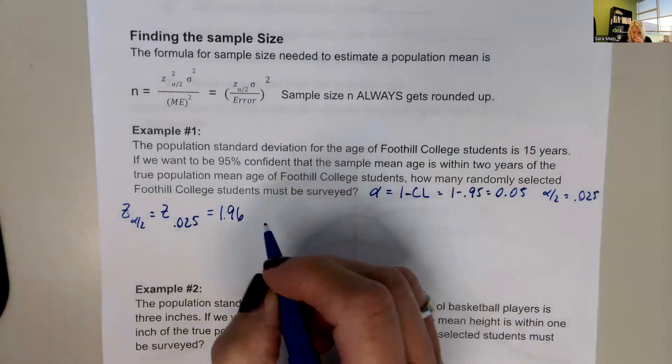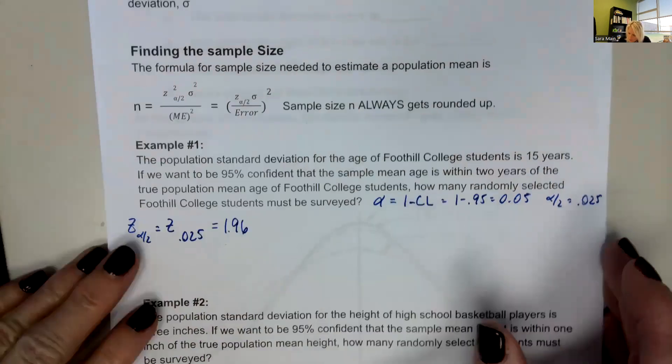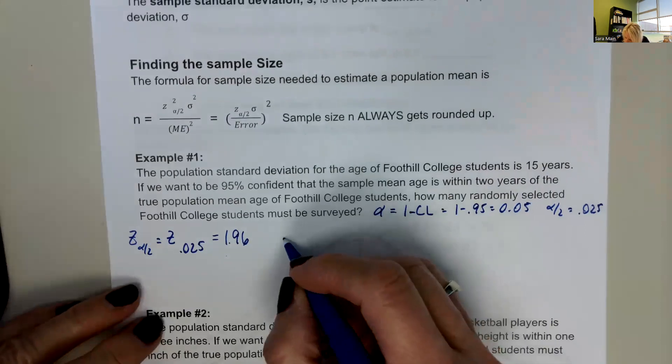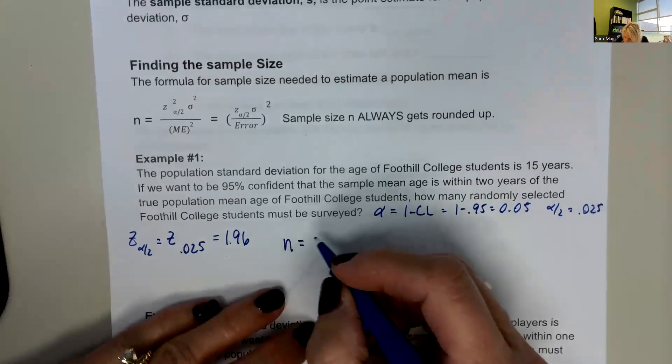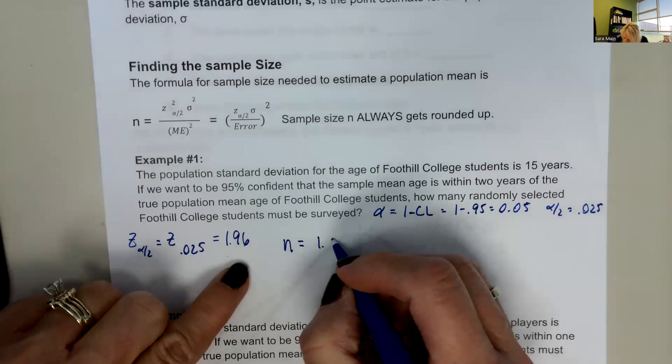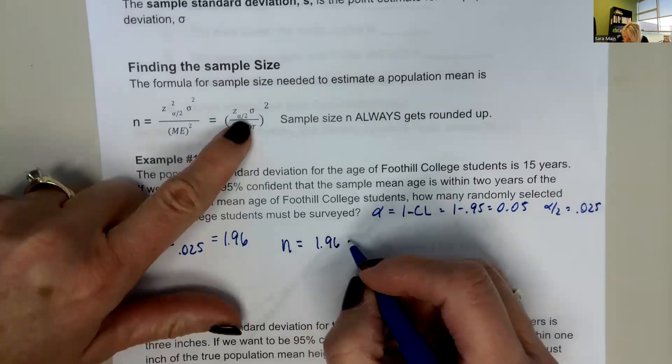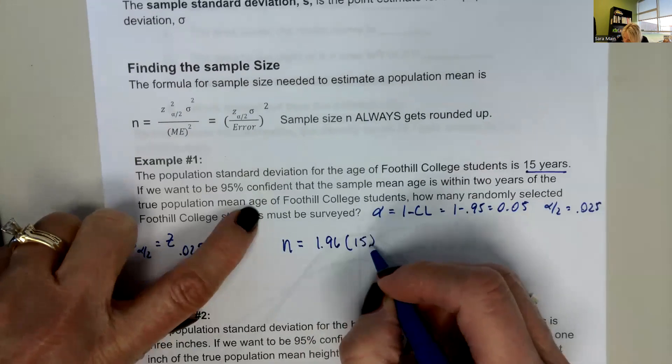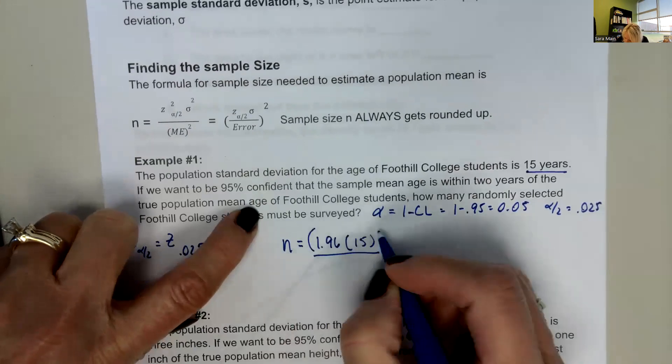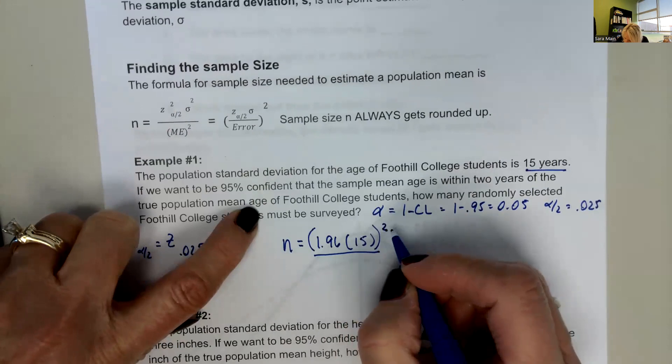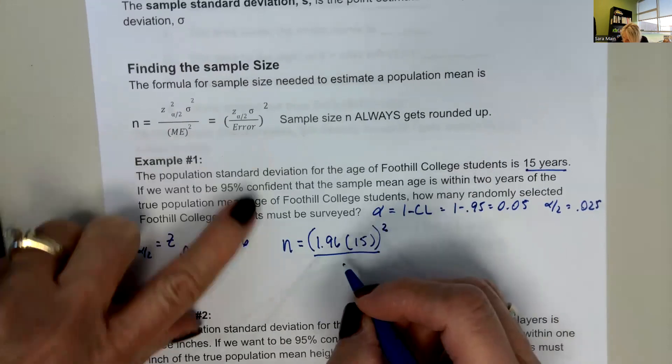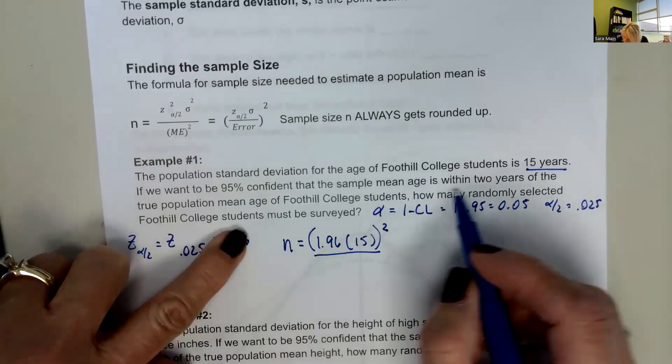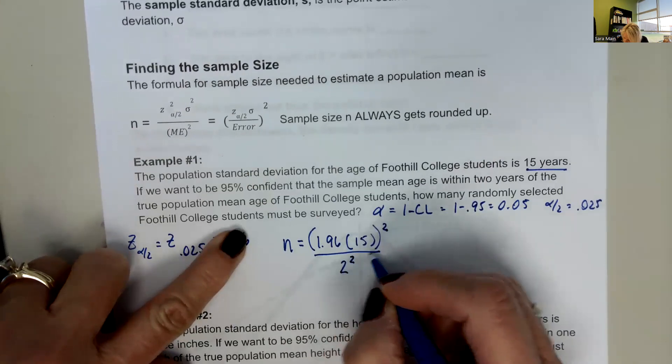I'm going to remind you how we know how to do this in Desmos as well. So let's fill in the formula on our paper and then we're going to use Desmos. So 1.96 and that's going to get multiplied by the 15 years of standard deviation. And then that numerator will get squared and then all over the error, which we said we want it to be within two years. And we need to square that as well.